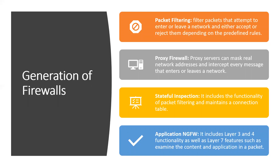Packet filtering firewalls deal with traffic entering or leaving the network, and based on predefined rules, they allow or deny particular traffic. Proxy firewalls work on real network addresses and intercept every message based on whether it is entering or leaving the network. Stateful inspection firewalls have the capabilities of packet filtering plus they maintain a connection table which includes all session details — source IP, destination IP, the port being requested, the protocol type — and it maintains that connection table.